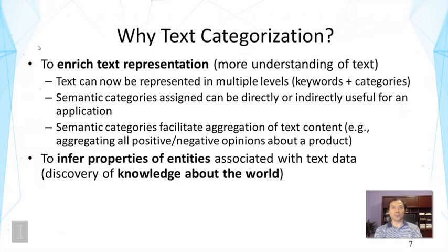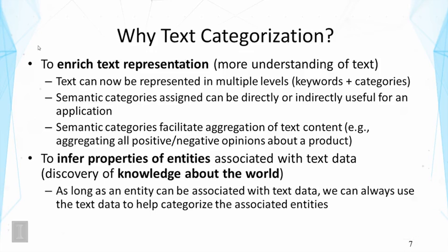The second kind of reason is to use text categorization to infer properties of entities. Text categorization allows us to infer properties of entities associated with text data, enabling discovery of knowledge about the world. As long as we can associate an entity with text data, we can use text data to categorize corresponding entities. It is useful to think about the information network connecting entities with text data — authors are directly connected, but affiliations, ages, and other attributes can be connected indirectly. Once the connection is made, we can make predictions about those attribute values.